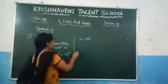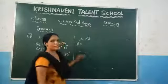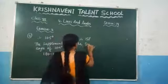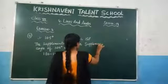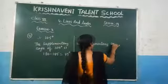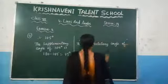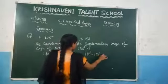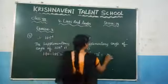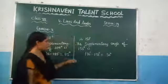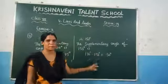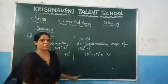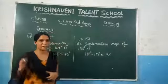Now the supplementary angle of 150 degrees is nothing but 180 minus 150, which gives you 30 degrees. Because if you add 150 plus 30, you are getting the answer which is 180 degrees. So we can say that the supplementary angle of 150 degrees is 30 degrees.